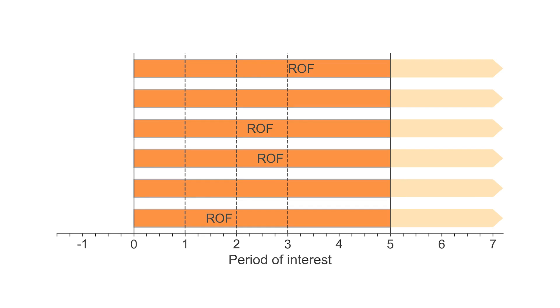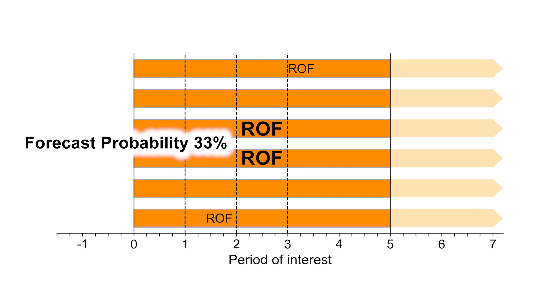For example, on day three, since two of the six forecasts indicate rapid-onset flooding, the forecast probability is 33%.